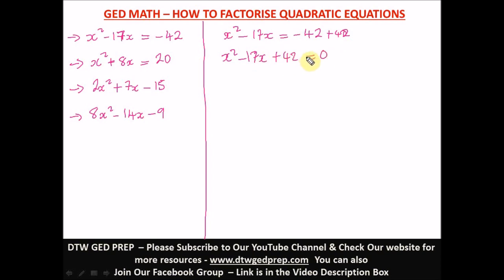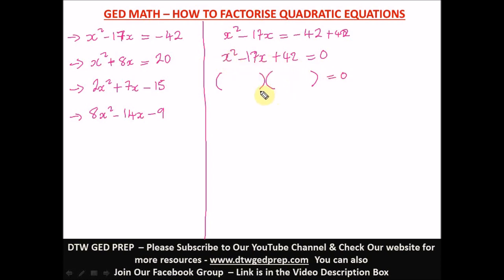I always teach my students: if you're taking a negative number to the other side, it just changes to positive — that's quite fast and easy. Now from here, to factorize this, open two brackets and put your x in each. The next thing is to look at positive 42 and find its factors.